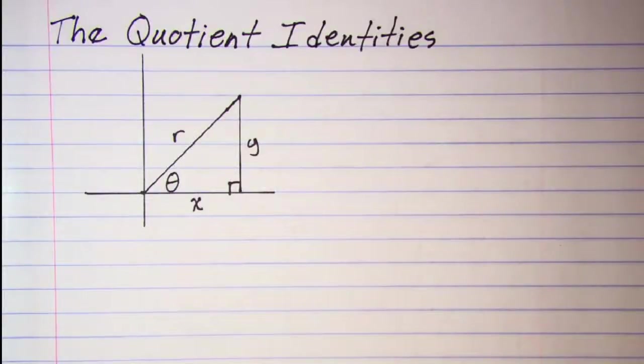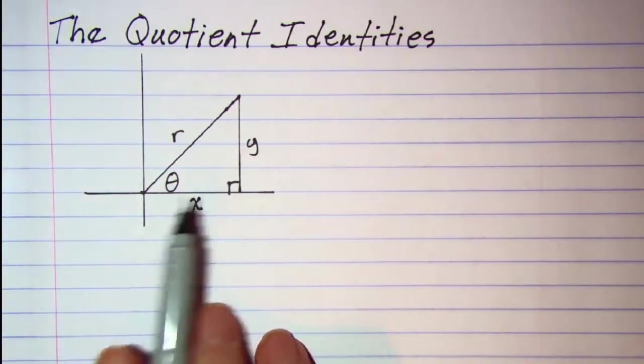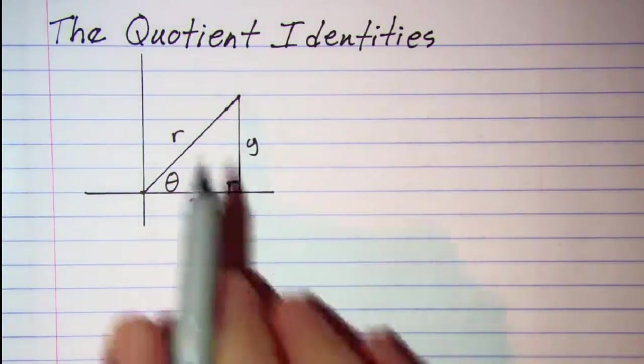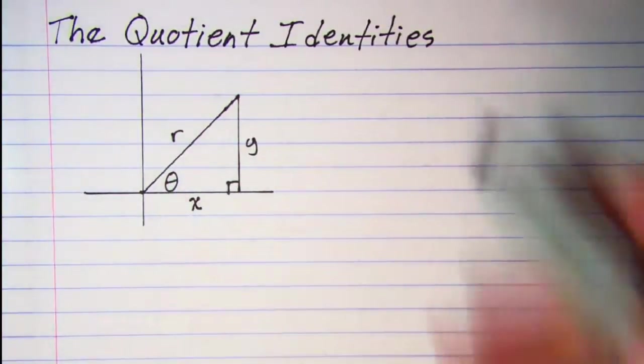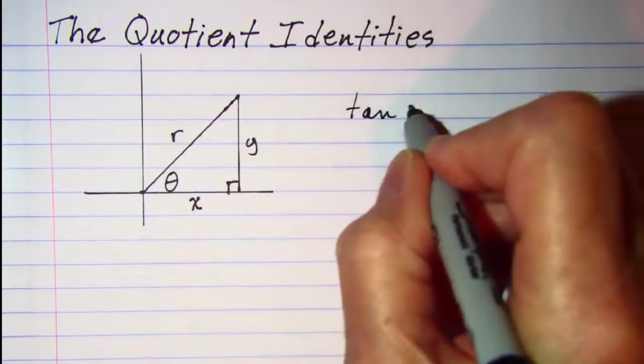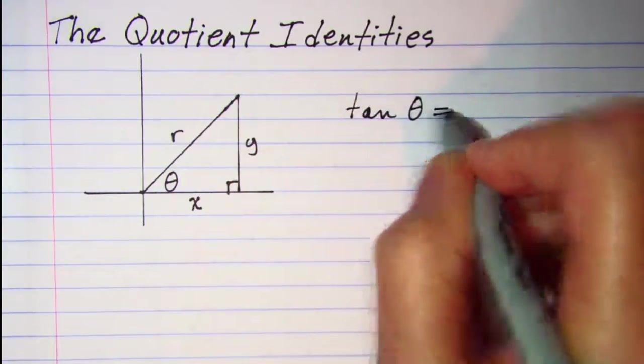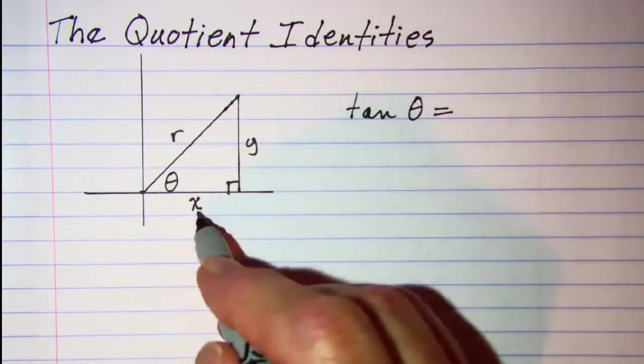In this video we'll be looking at the quotient identities. From our reference triangle here we see that the tangent of theta is equal to y over x.